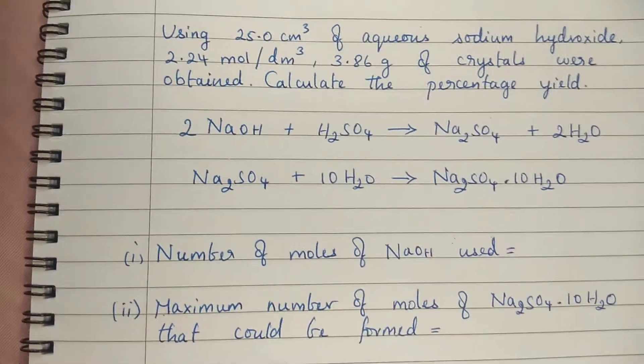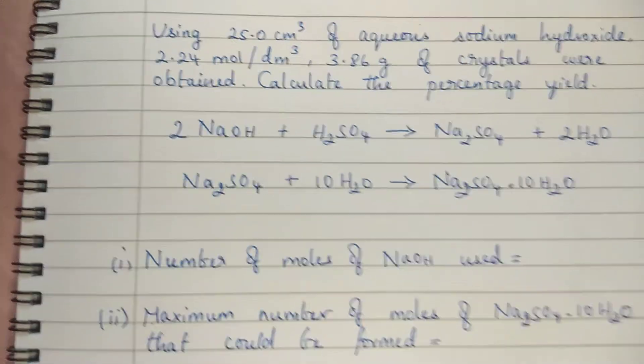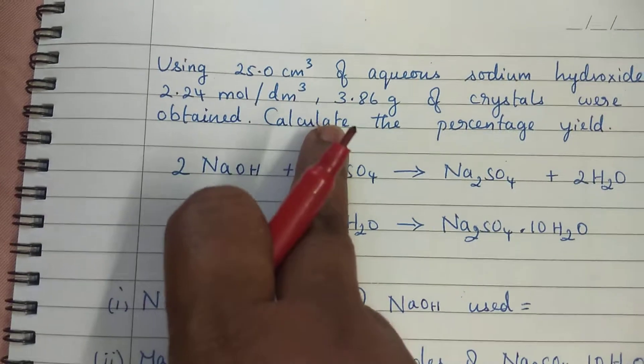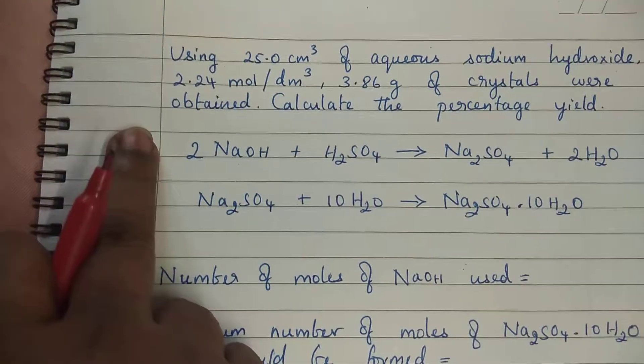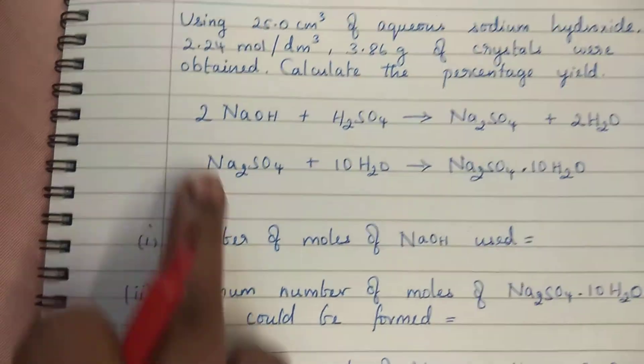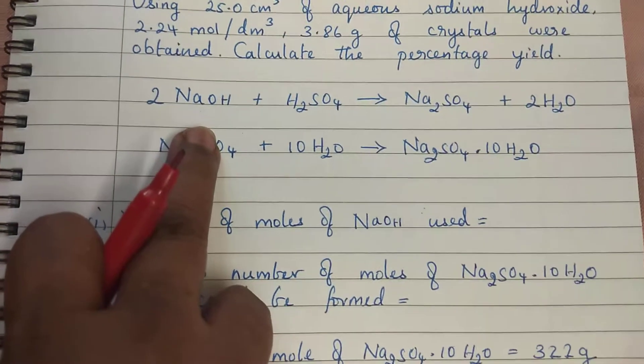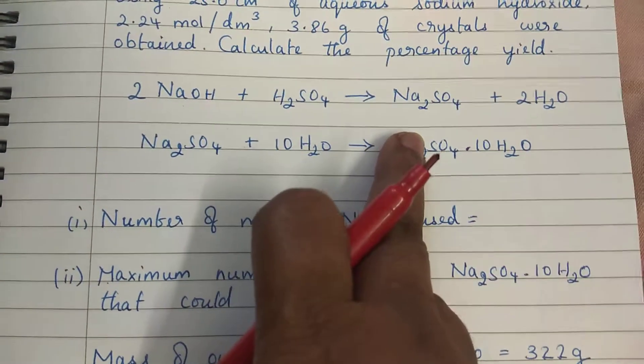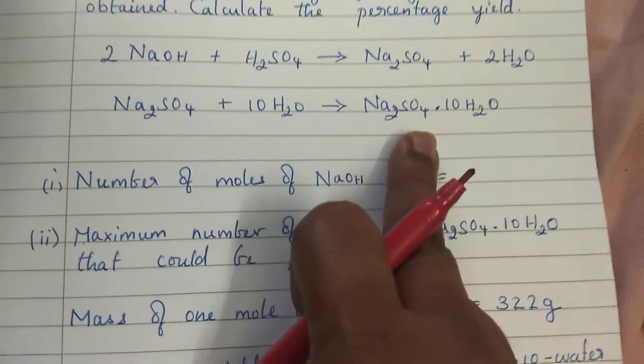Using 25 centimeter cube of aqueous sodium hydroxide 2.24 mole per decimeter cube and 3.86 gram of crystals were obtained. Calculate the percentage yield. Here this is the reaction: 2 moles of NaOH reacts with H₂SO₄ gives Na₂SO₄. The end product is hydrated sodium sulfate.